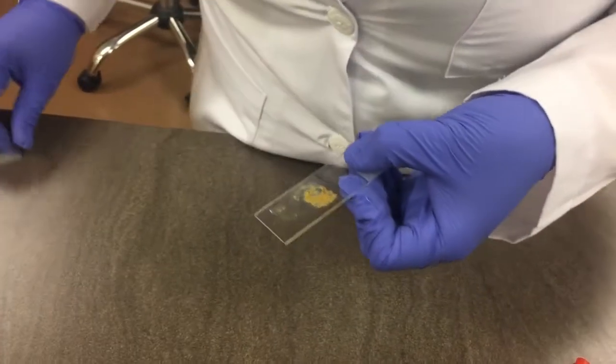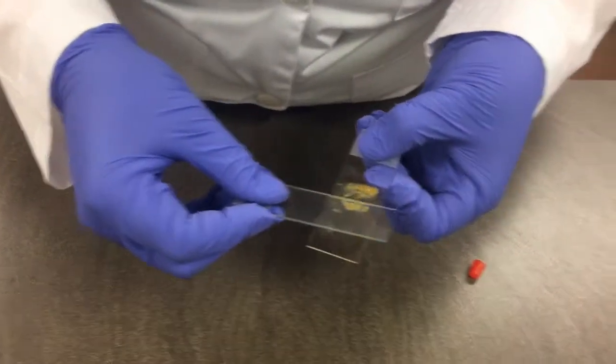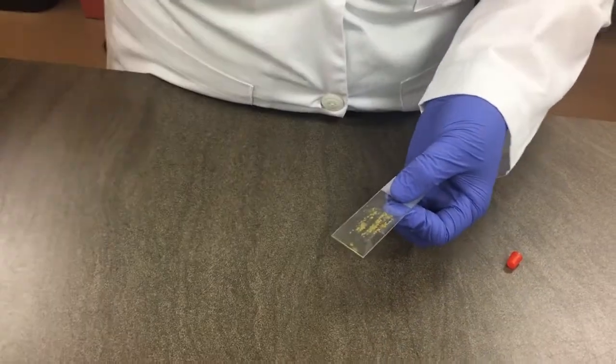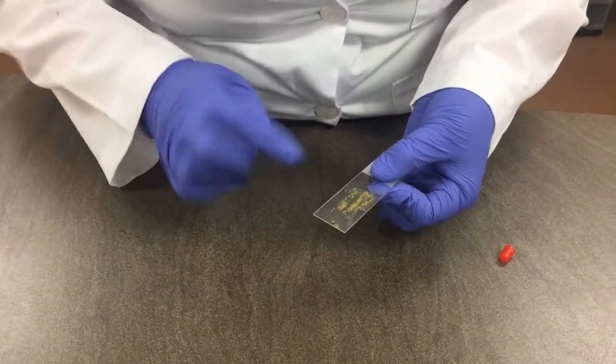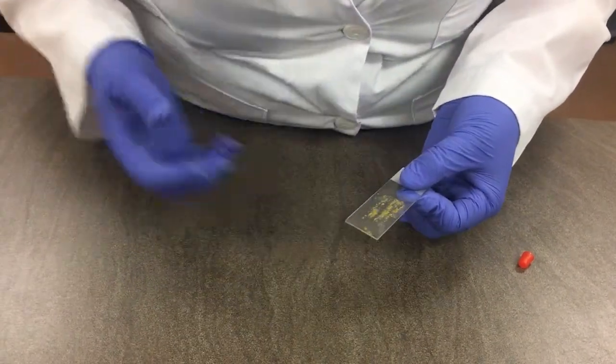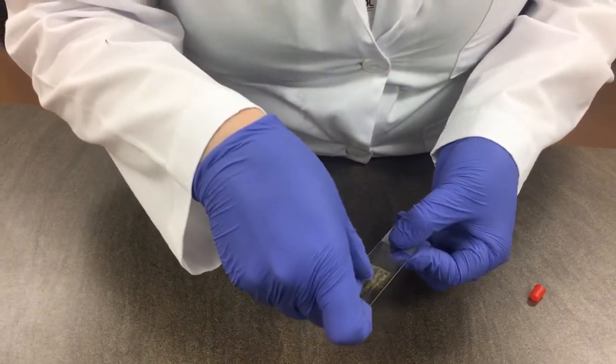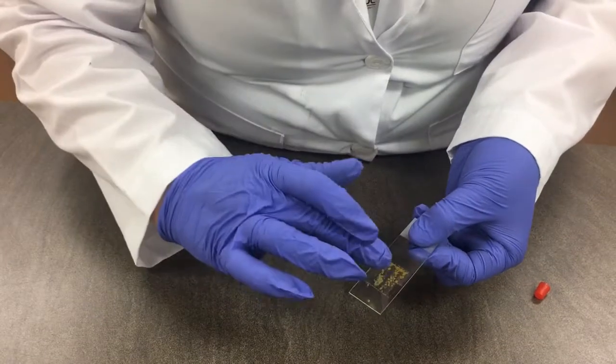And then we're going to take another slide and make a smear. Alright, so we made a smear on the slide. We want it thin enough where we can read newspaper under it if we had to. And then we're going to take a cover slip and put it on the slurry.